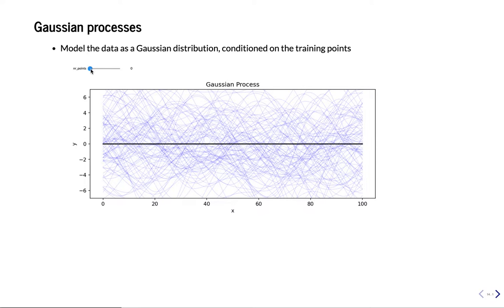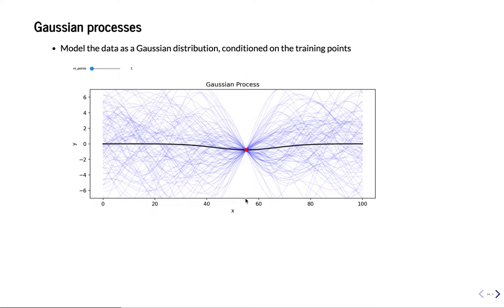Things change if I make just one observation. Now I see that x=55 corresponds to y≈−0.1. So I have the observation, and now the distribution of possible functions is going to change, so that any function that would go far from this point is very unlikely. Only functions that go through this point or near this point are going to have high probability. My space of possible functions has drastically changed. I'm very sure about what y is around this point, but still very unsure about points further away from x=55.